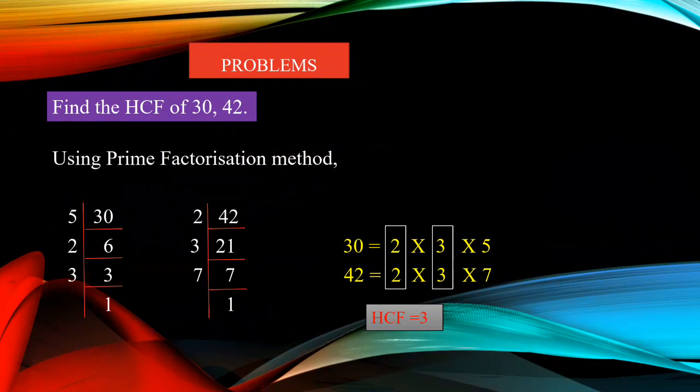Next, 42. 42 is an even number, so we can use 2 — 21 twos are 42. 21 is an odd number, so we are taking 3. 21 divided by 3, you will get 7 — 7 threes are 21. For 7, we use the same number because 7 is a prime number. 7 divided by 7 is 1.